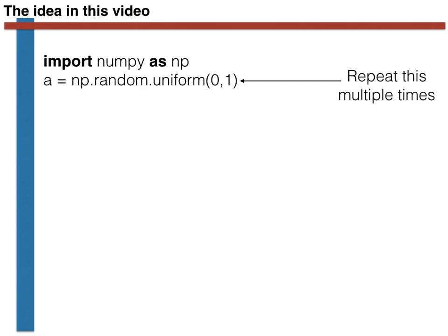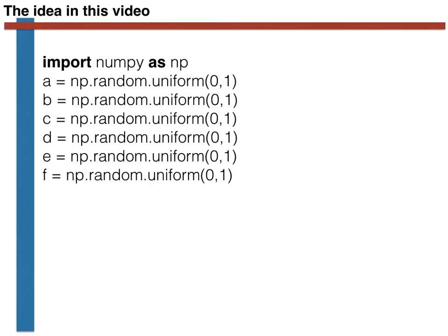Using what we have learnt thus far, we could do this as shown here. We could simply copy and paste our command to generate a random variable multiple times and change the name of the variable that we are setting each time. This way of doing things is fine if we are generating a sample of six random variables as we are doing here. If we are generating 60,000 random variables, however, it would be bad to do it this way as it would involve writing 60,000 lines of computer code.